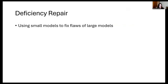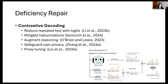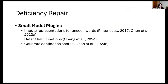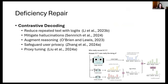You can use small models to fix flaws of large language models. This leads into contrastive decoding. Contrastive decoding leverages the differences between two models — a larger capable model (the expert) and a smaller, less capable model (the amateur). The idea is to choose tokens that maximize the difference in log likelihood between the expert and amateur, selecting tokens that the expert model finds highly probable.